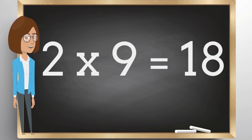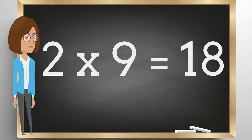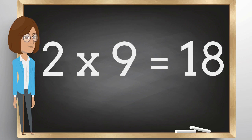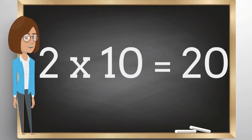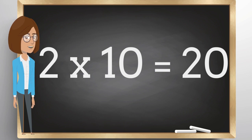Two times nine is eighteen. Two times ten is twenty.